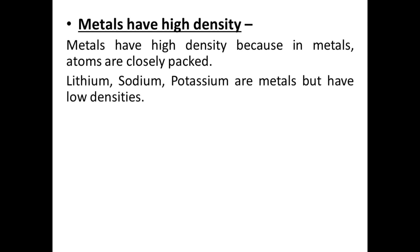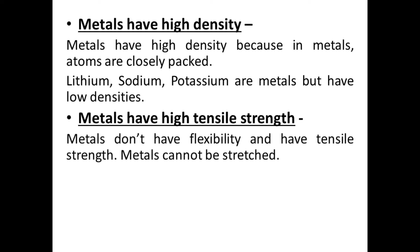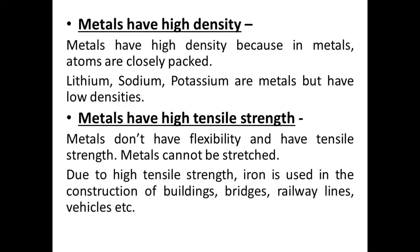Next property is high density. Metals have high density because in metals, atoms are closely packed. Lithium, sodium, and potassium are exceptions with low densities. Next property is high tensile strength. All metals have high tensile strength — metals are not flexible and cannot be stretched. Due to high tensile strength, iron is used in the construction of buildings, bridges, railway lines, and vehicles.